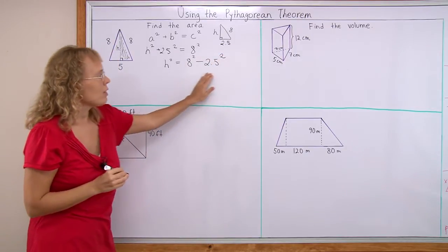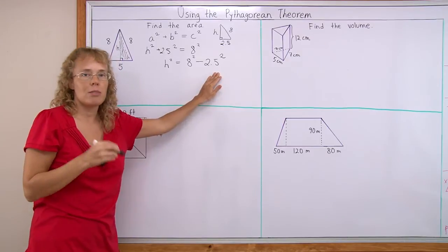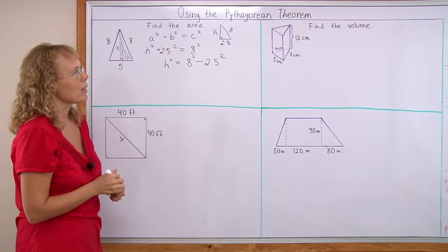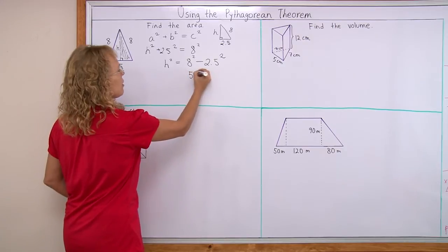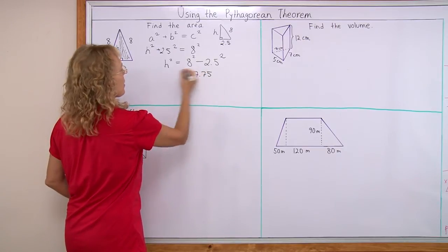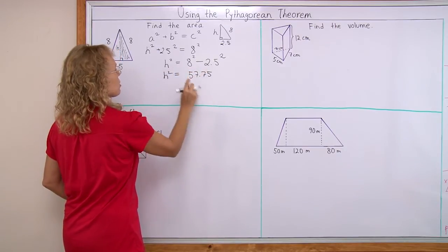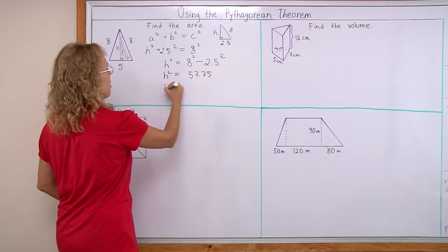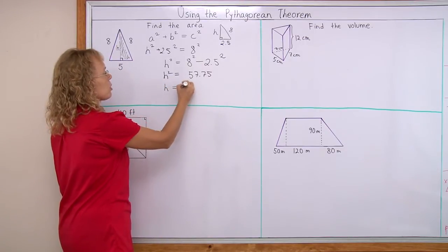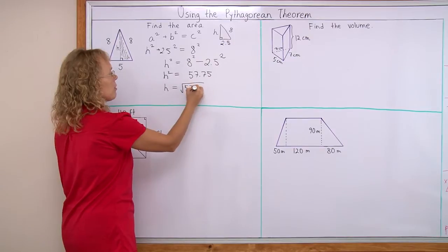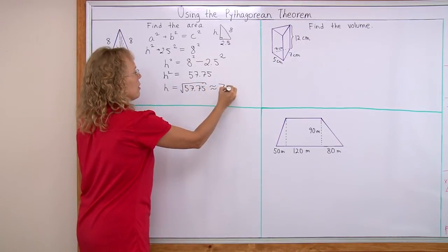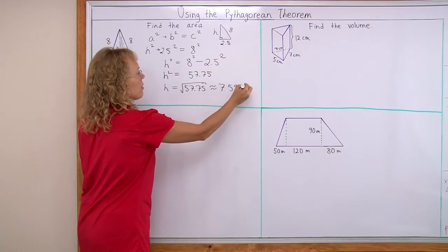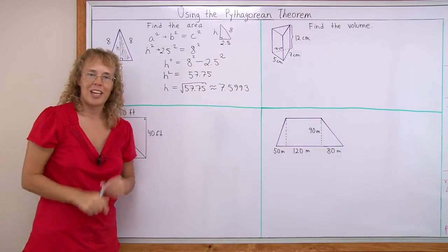And now you calculate this using a calculator and then we need to take the square root. And this one here is 57.75. So h squared equals 57.75 and then the height is equal to square root of this number, 57.75, 7.5993.